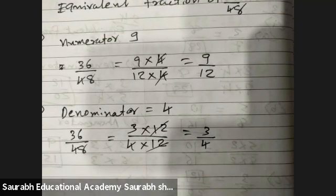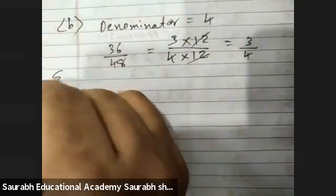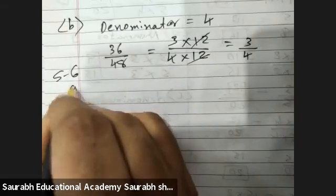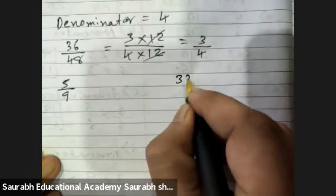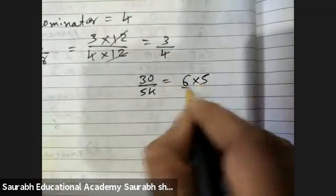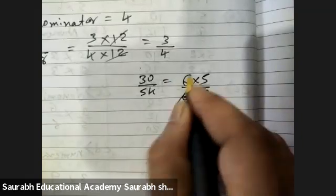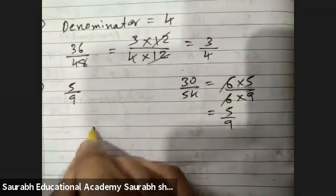Check whether the following fractions are equivalent. Sum Number 6, A. Five by nine and thirty upon fifty-four. Let's factorize. Six fives are 30, six nines are 54. Six cuts, five by nine is left. These are equivalent.